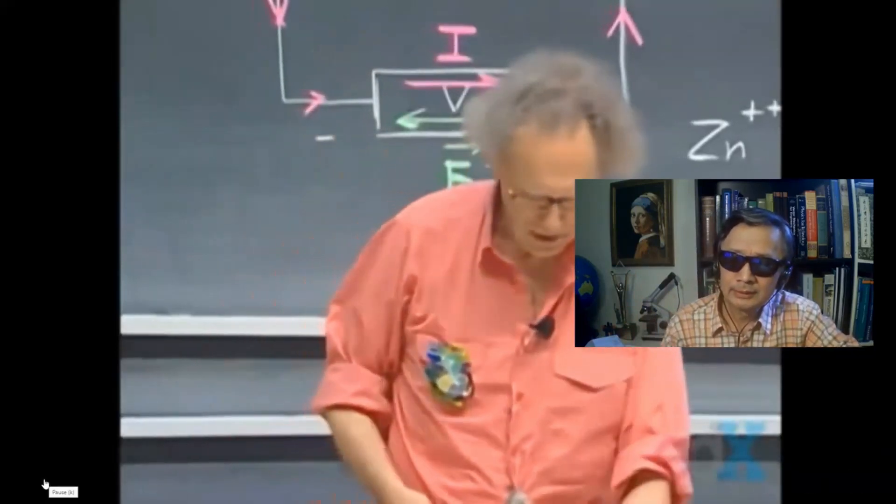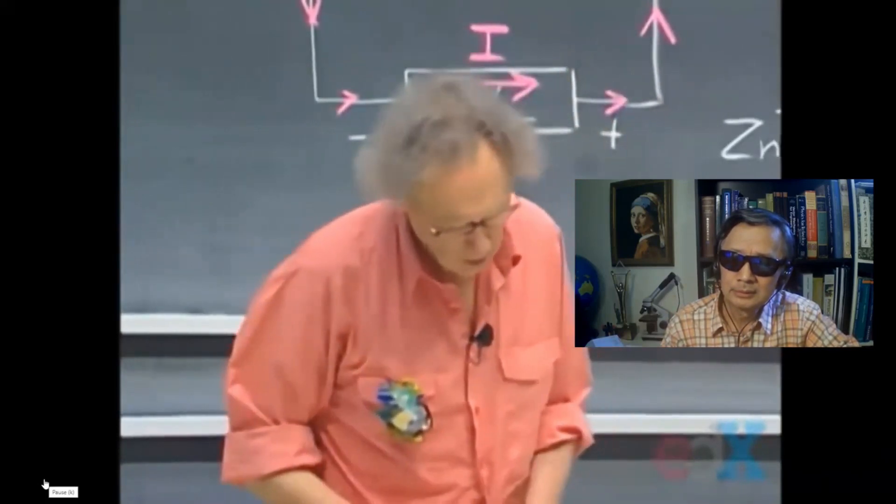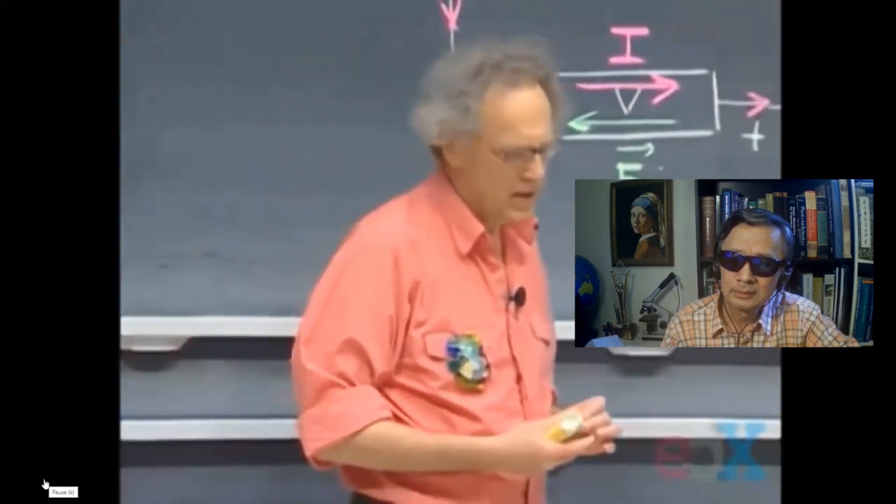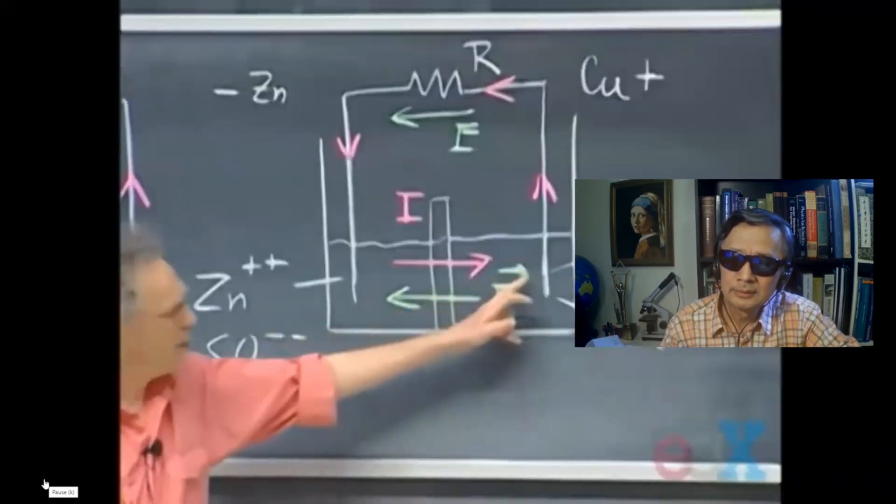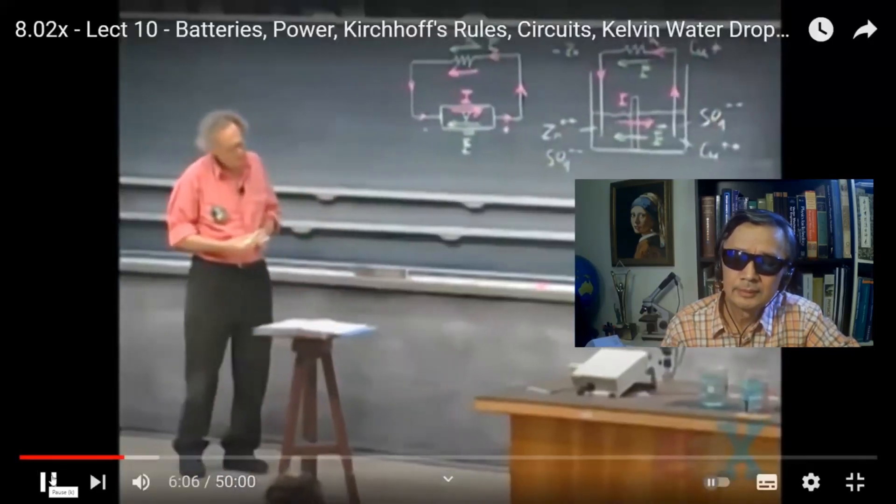So you get an increase in the concentration of the zinc. So the charge carriers inside this battery, the SO4 minus ions, travel through this barrier, and they go from here to here. So they travel through the electric field that opposes their motion. And this happens at the expense of chemical energy.